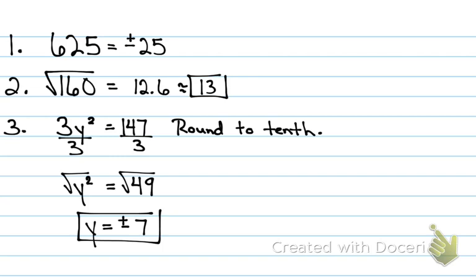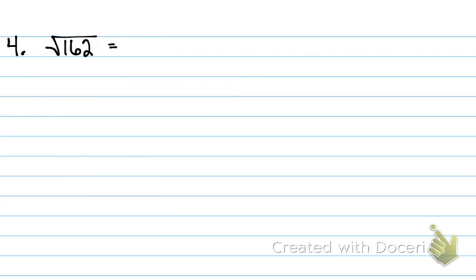Your answer is both positive and negative. Why? Because negative 7 times negative 7 is positive 49, times 3 is still 147 — it still checks out. That's why the answer is both. There's also no radical in the original problem, so the answer is positive and negative.